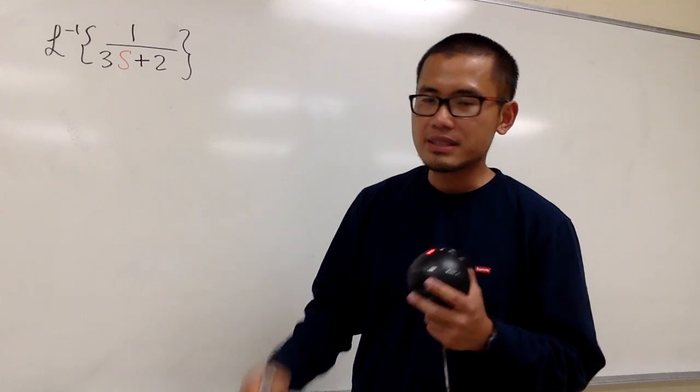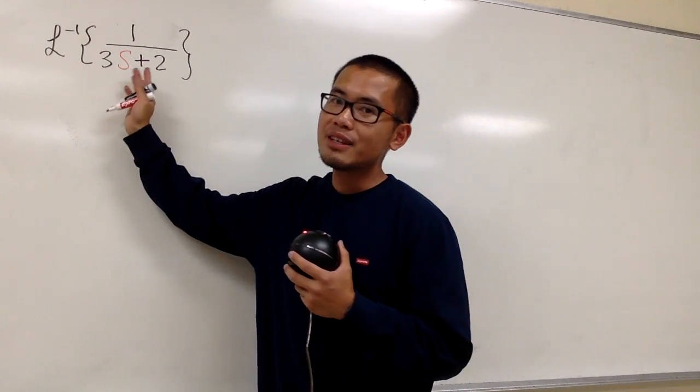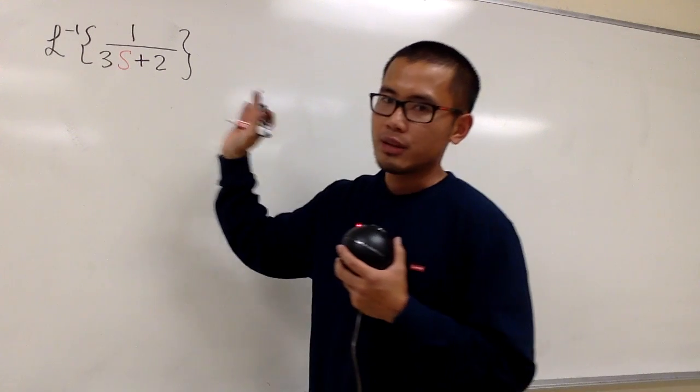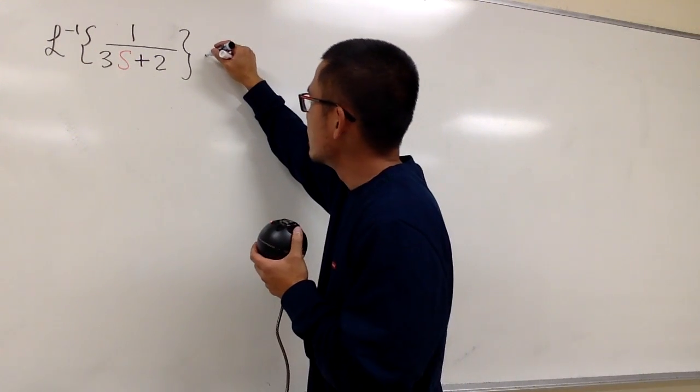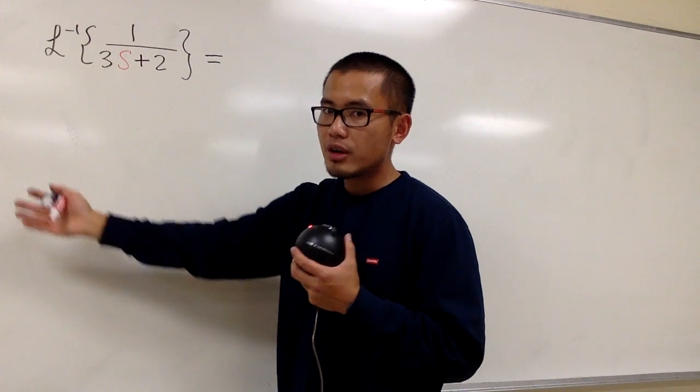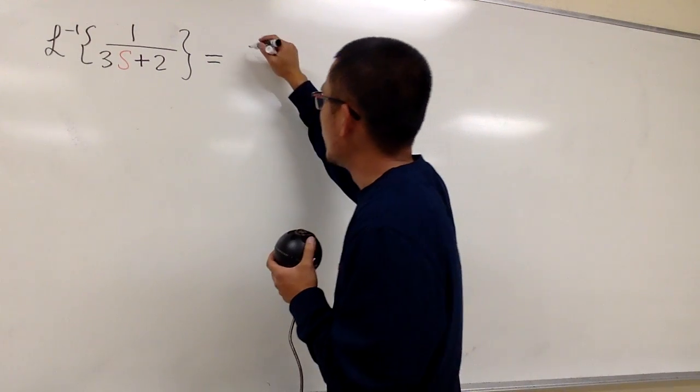But this is an easy fix because we can factor the 3 out. It's just going to be a constant multiple, and I can bring that to the front. Let me show you how to do that. I'm going to factor out a 3 in the denominator, in other words, I will take out a 1 third.